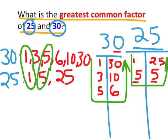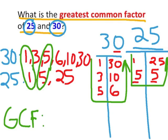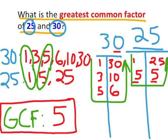Are there any other factors that both 30 and 25 share? Do they both have a 6? Well, 30 has a factor of 6, but 25 does not. 10 is not a factor of both 30 and 25, and neither is 30. So our greatest common factor of 25 and 30 is 5. And that is our answer.